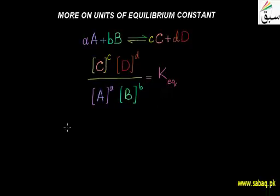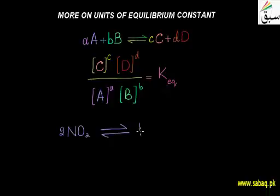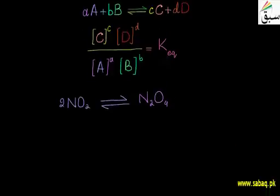Now let's see the units. We will write some equations. For example, the first equation: nitrogen dioxide N₂O₂ — actually, we have a reversible equation where nitrogen dioxide reacts to form dinitrogen tetroxide N₂O₄. This is a reversible equation. Now we will place values into the formula.